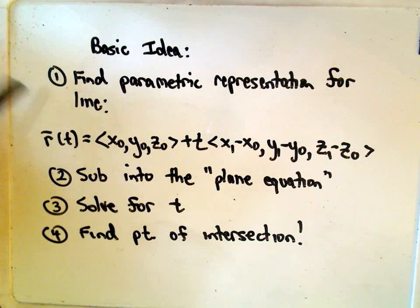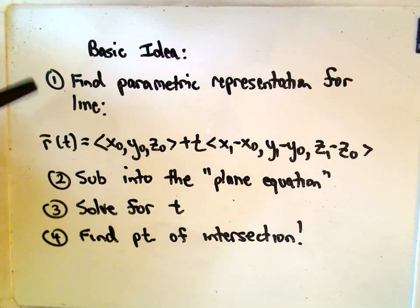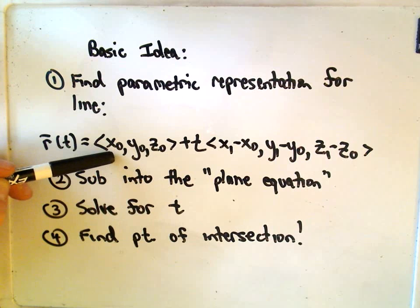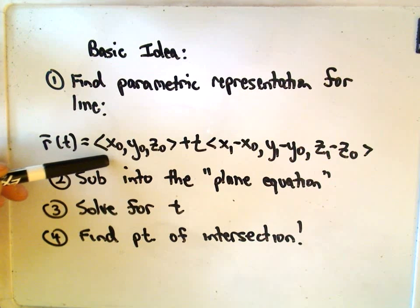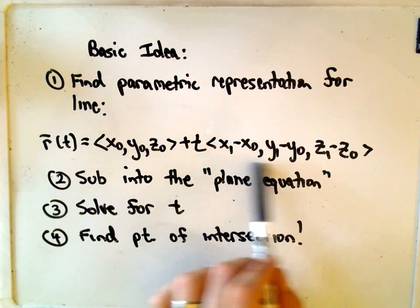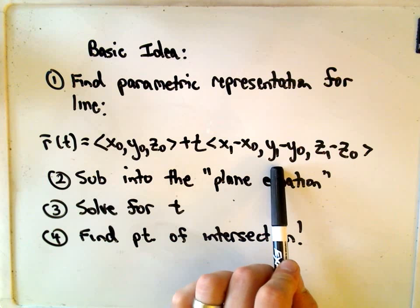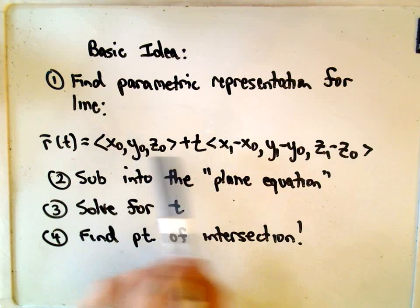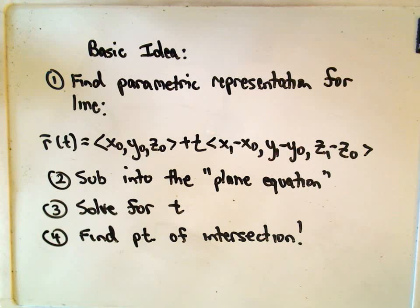The basic idea, all you have to do is first find a parametric representation for the line. So you take one of the points on the line and use the position vector that would point at that line. And then we find the direction vector that would go through the two points, multiply that by t, and put that together. That will give us the parametric representation.